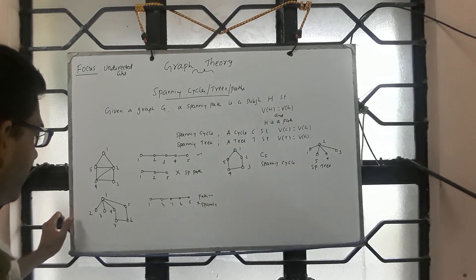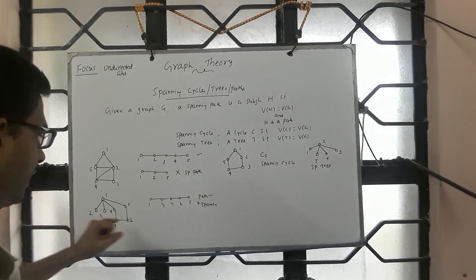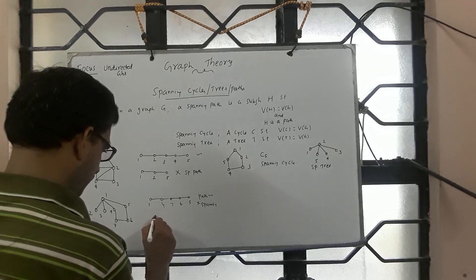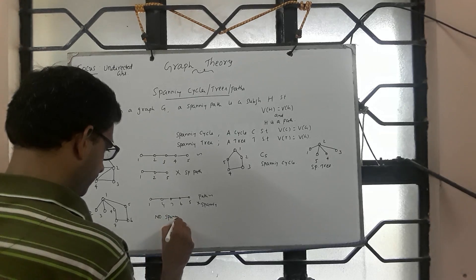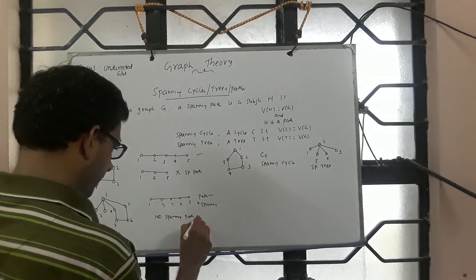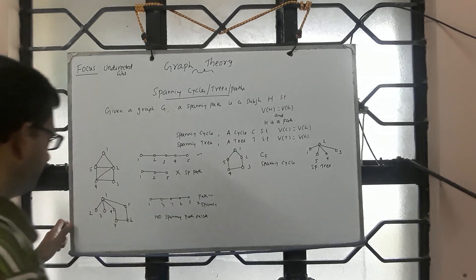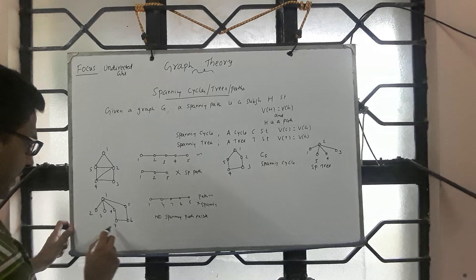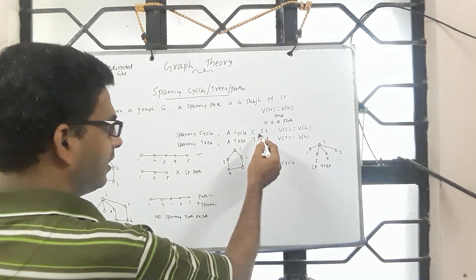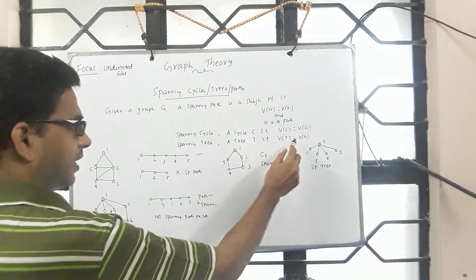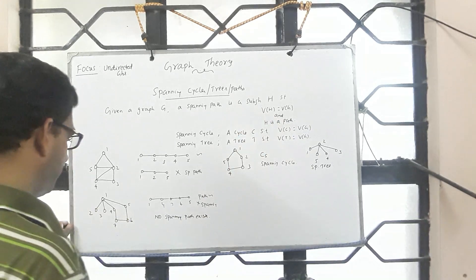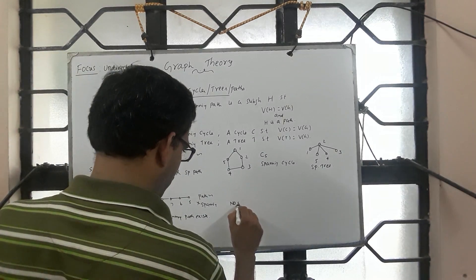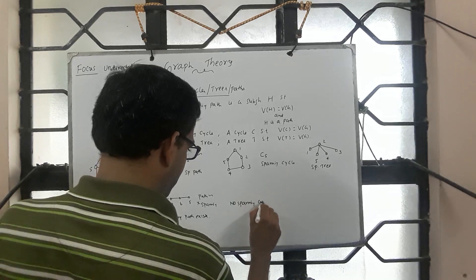Is there a subgraph which is a path and spanning? Can we include vertices 2 and 3 and still get a path? The answer is no. So this graph has no spanning path. Similarly, a cycle here is not a spanning cycle — we need a cycle containing all vertices. So no spanning cycle exists either.